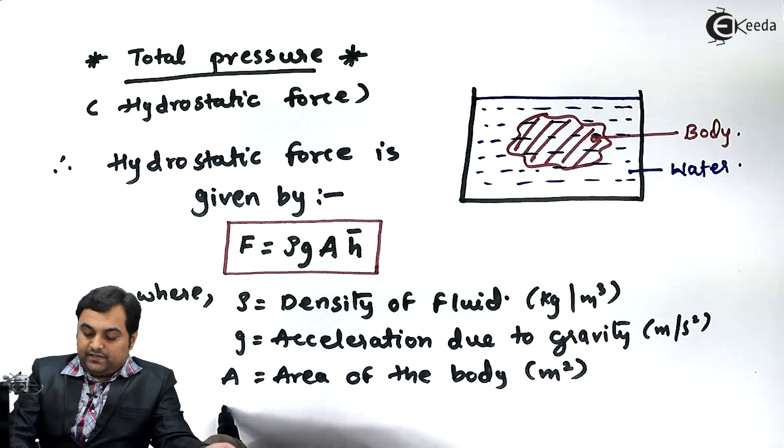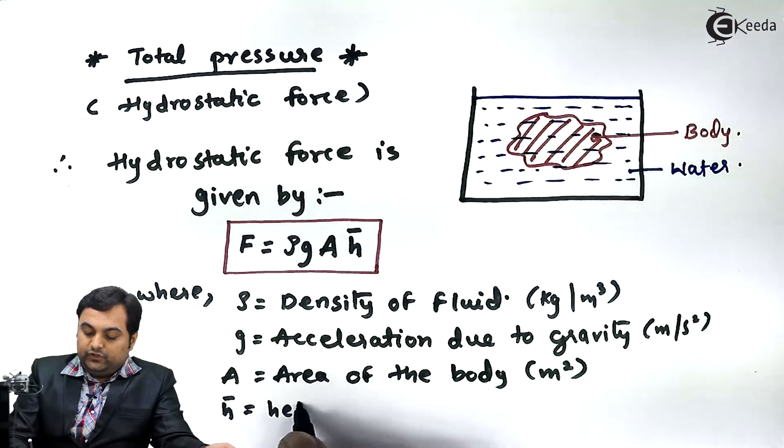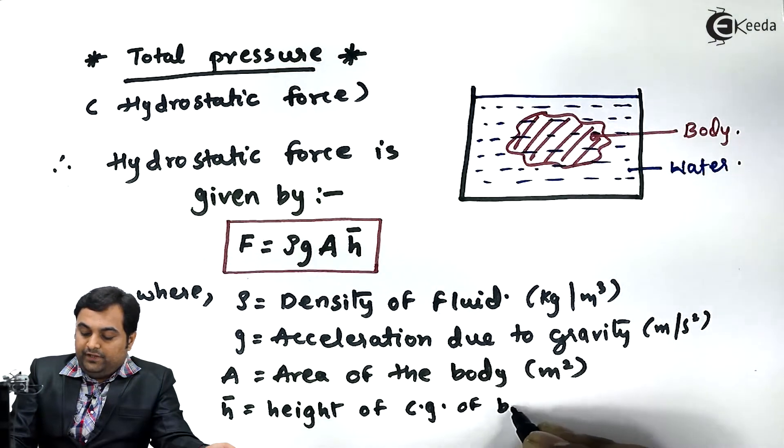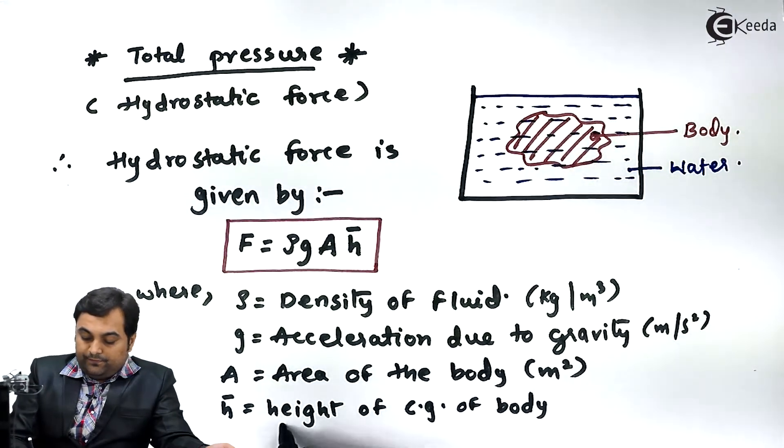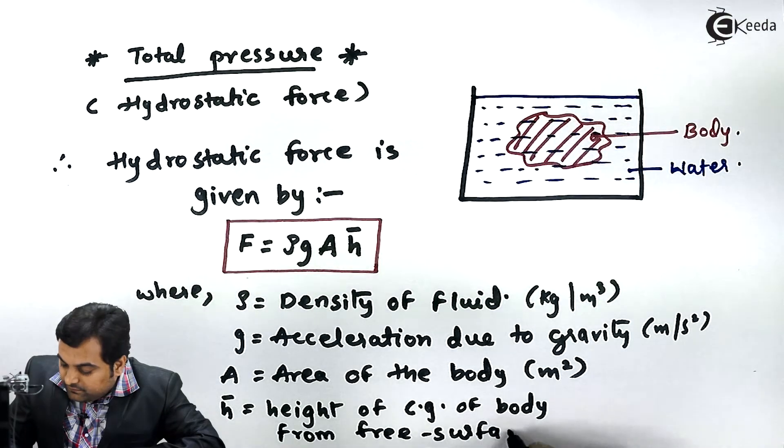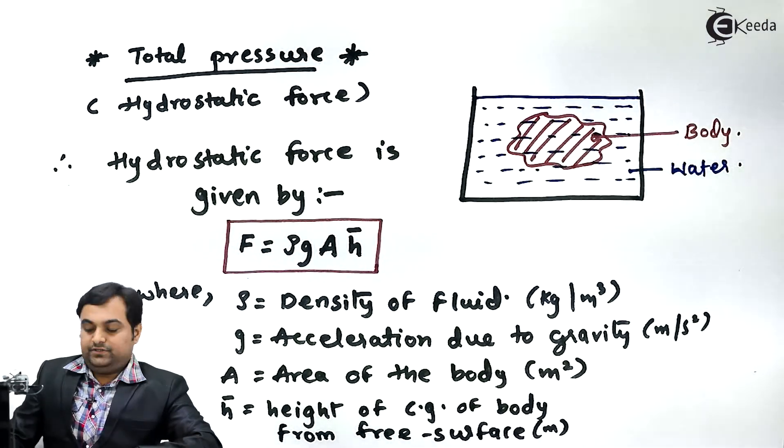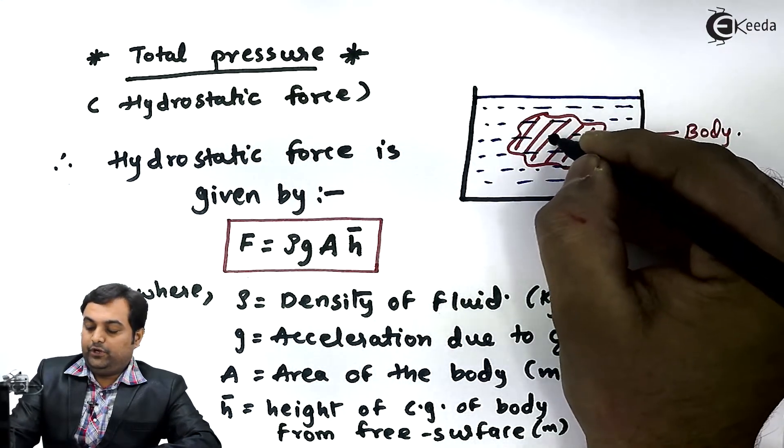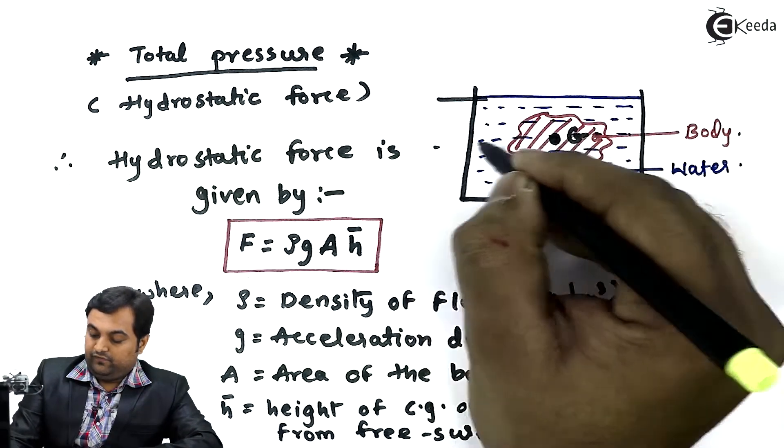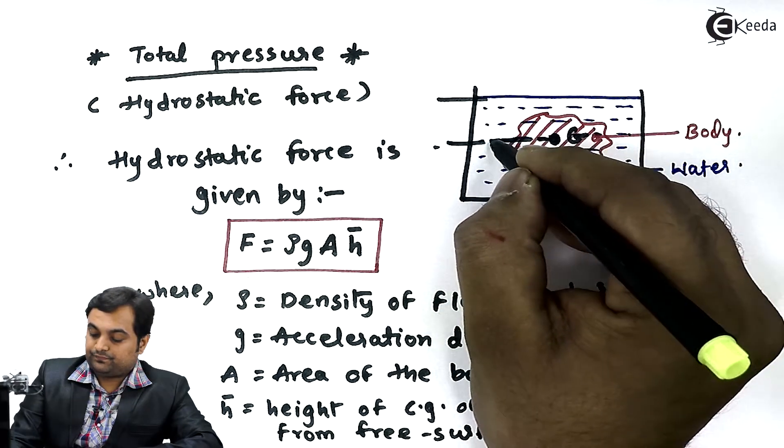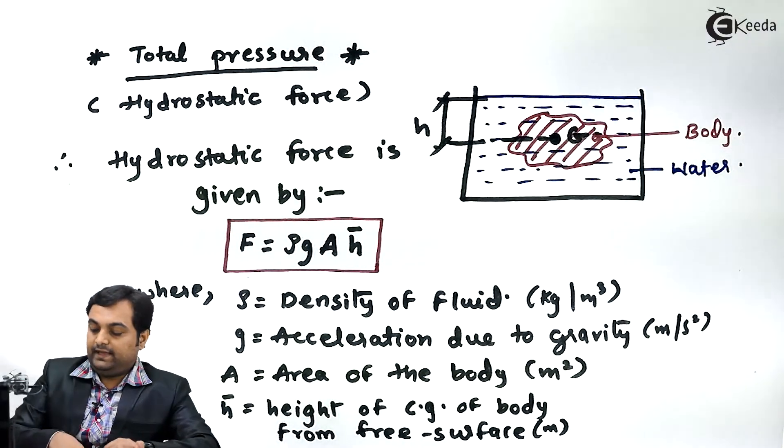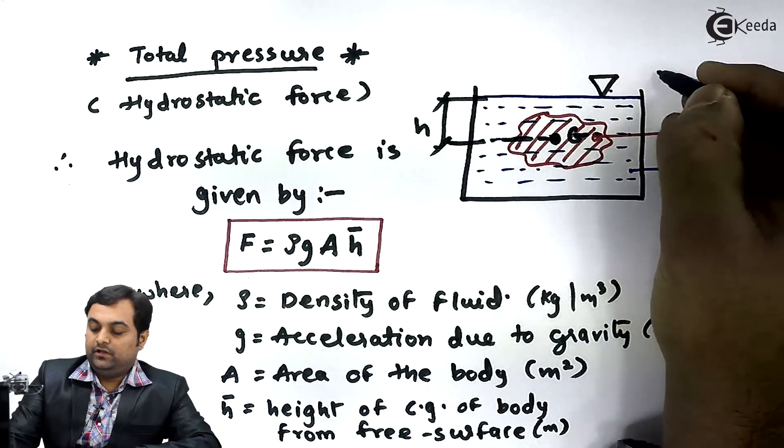And H bar is the height of CG, that is center of gravity of body, from free surface. It would be in terms of meter. See, if we have a body, in that we have a point called as center of gravity denoted by G. And the distance of center of gravity from the free surface, this is denoted by H. And this free surface is exposed to atmosphere. This is a symbol which indicates that the fluid is exposed to atmosphere.